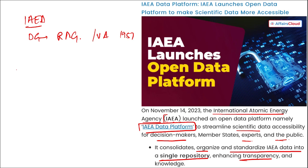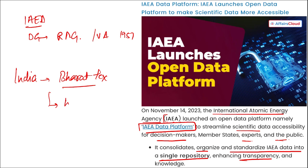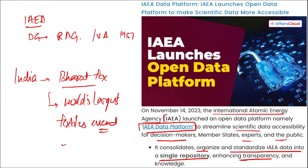Which country hosted the world's largest textile event? It is India. The name of the event is Bharat Tex, and it will be held from 26th to 29th February 2024.